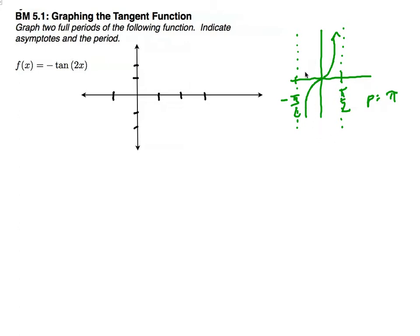So here's the normal tangent function. The period is π, different again from the sine and cosine, which are 2π. But there are some similarities as far as amplitude, phase shifts, and period changes. The number on the outside controls vertical shrinking or reflections. The number being multiplied by x controls the period. Adding controls side to side, and adding on the outside controls the up and down.